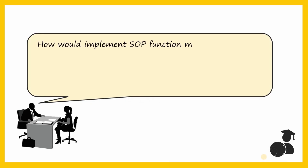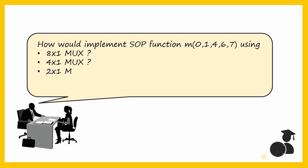How would you implement an SOP function — for example, a function with minterms 0, 1, 4, 6, 7 — using multiplexers? It may be either an 8-to-1 multiplexer, a 4-to-1 multiplexer, or a 2-to-1 multiplexer. You might also be given conditions such as: use the minimum number of multiplexers and logic gates, or use only multiplexers with no logic gates.